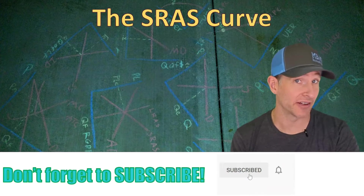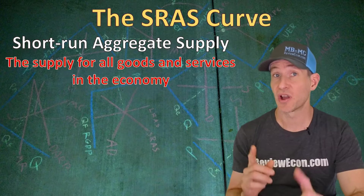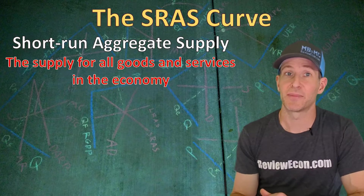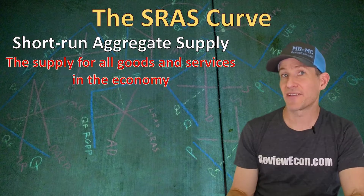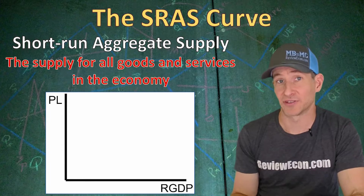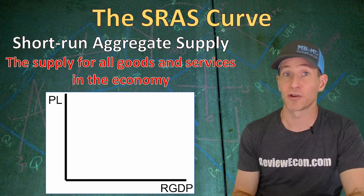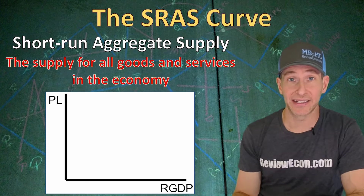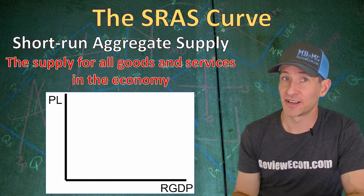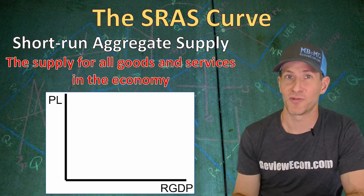The first thing we're going to talk about is the short run aggregate supply curve. That short run aggregate supply curve is the supply of all goods and services within the entire economy. When we graph out the short run aggregate supply curve, we're not going to have price on that y-axis. Instead, we're going to have the price level measured by the CPI or the GDP deflator. On that x-axis, instead of quantity, we're going to have real GDP. Real GDP is also called real income, real output, national income, and it correlates to employment. Higher levels of GDP means more people have jobs and lower levels of GDP means fewer people have jobs and we have more unemployment as a result.